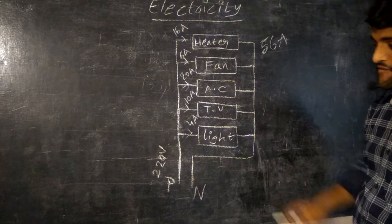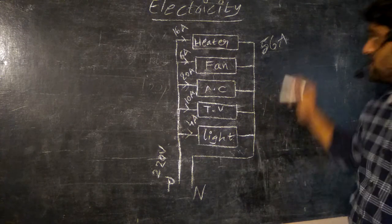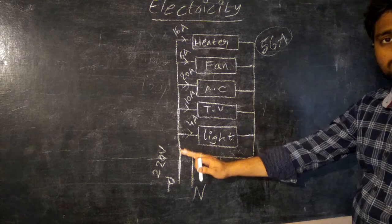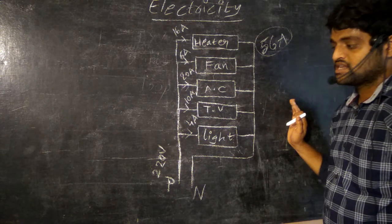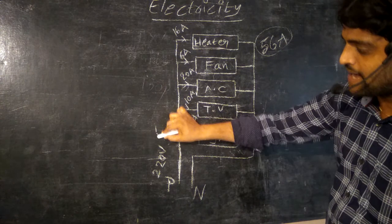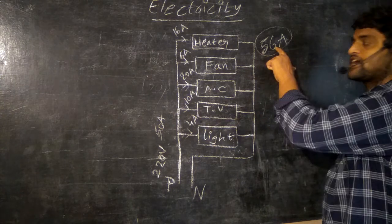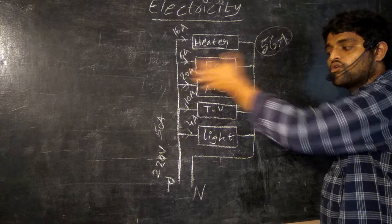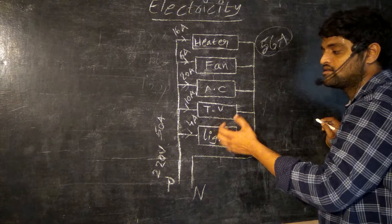Next thing, suppose all the devices should be used at the same time, then 56 amperes should be supplied. But suppose the supply is 50 amperes. The required amount of current is 56 amperes. That means more current should be needed for the devices to work.